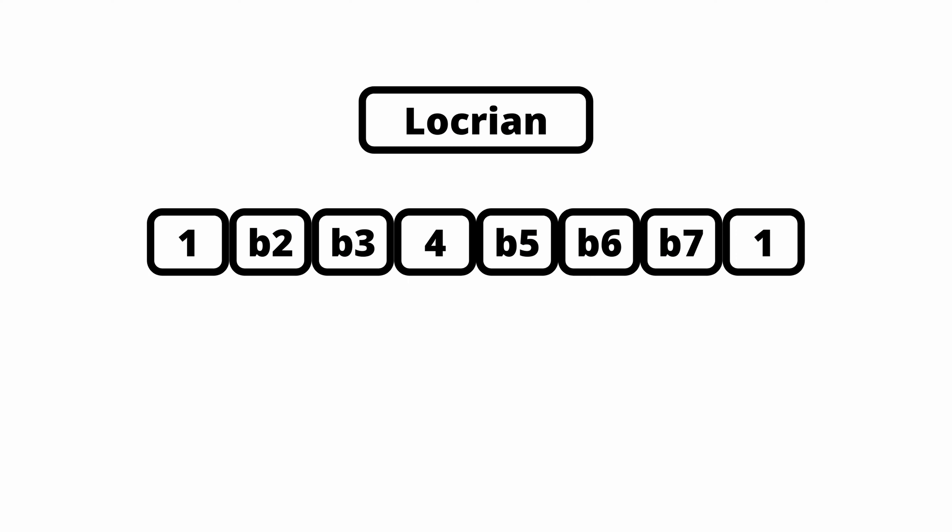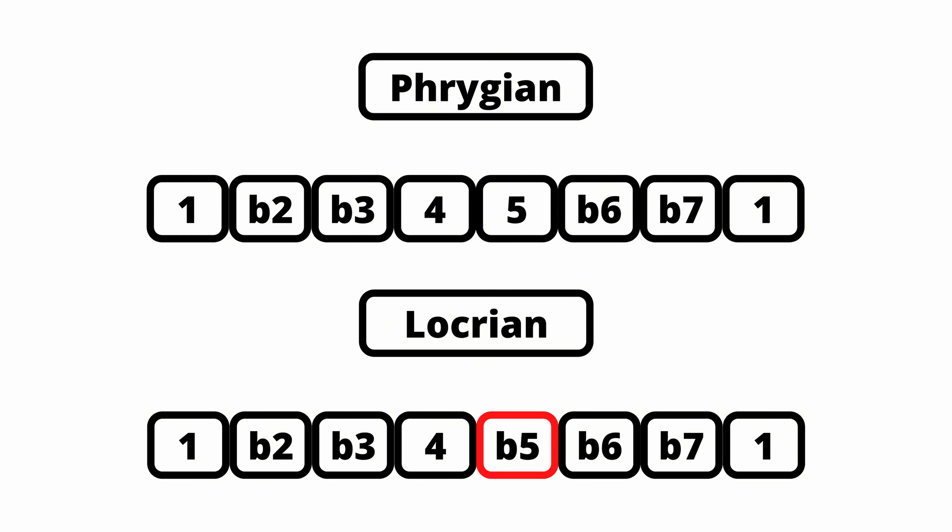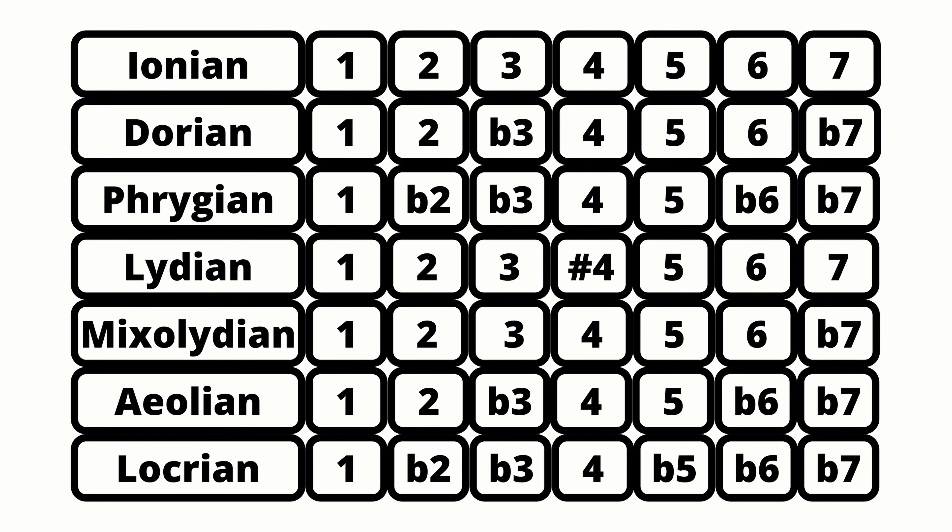And finally, the Locrian mode. The formula for the Locrian mode is 1, b2, b3, b4, b5, b6, b7, 1. As you can see, the difference between the Phrygian and the Locrian mode is that the Locrian mode has a flattened 5th degree. This is a very important distinction. If we take a look at all the modes together, you will notice that the Locrian mode is the only one that doesn't have a perfect 5th. This is why it's so difficult to compose music with this mode — without a perfect 5th, the Locrian mode just lacks a sense of resolution. And because of that flattened 5th, the tonic chord of the Locrian mode is a diminished chord, so it always feels like it wants to resolve somewhere else.